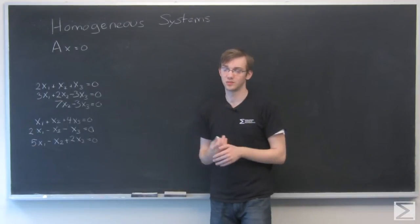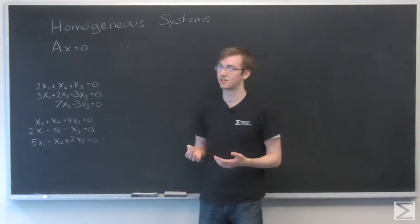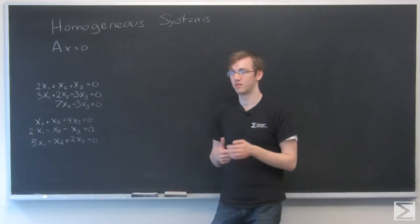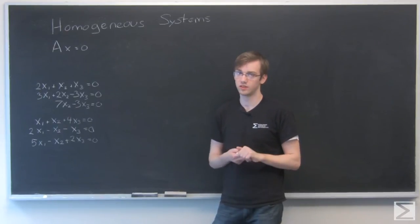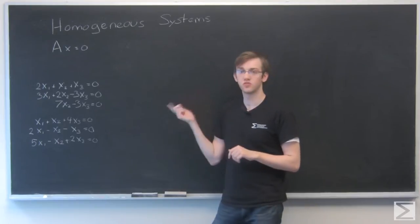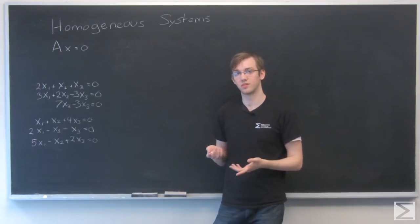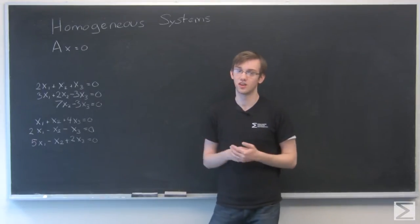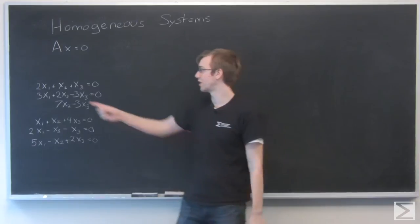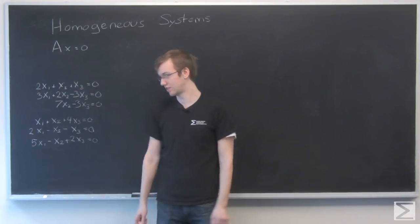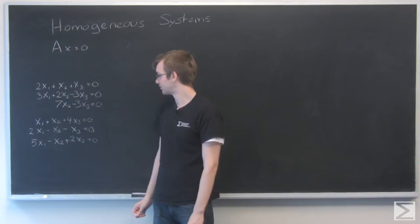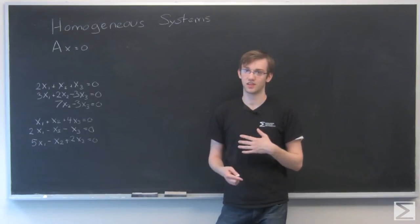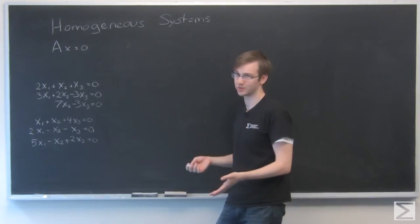So in a previous video, we talked about the number of solutions that a system of equations can have, where we said it can either have no solutions, one unique solution, or infinitely many. For a homogeneous system, that first option is ruled out because every homogeneous system at least has one solution, which is the trivial solution, where x1, x2, x3 are all equal to 0. And so the question basically becomes, is there a solution beyond the trivial solution?